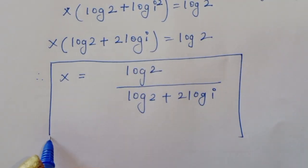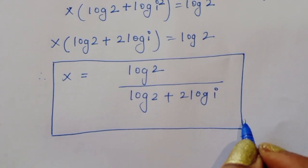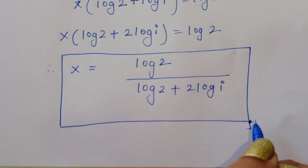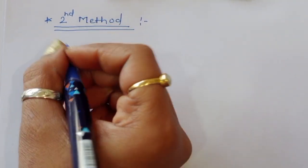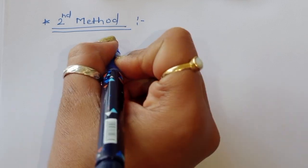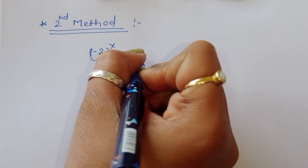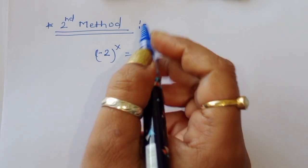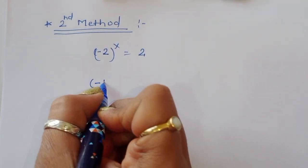Now we can solve this using a second method, which is a little bit more difficult. In the second method, the question is again (-2)^x = 2. We write -2 as (-1) times 2, so (-1)^x × 2^x = 2.